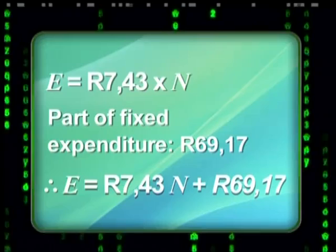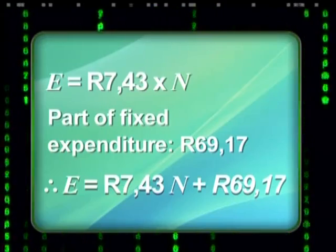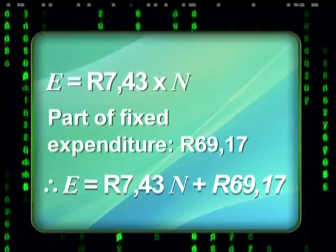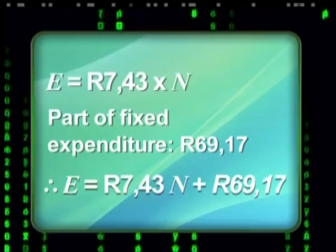Is the formula for total expenditure complete? No. Remember, I've allocated an equal part of the fixed expenditure to each item. So before Ma Di even makes a ribbon, she has a cost of 69 rand and 17 cents to cover. This value is not going to change and must be added to the total expenditure. This means my final formula for expenditure is E equals 7.43 times N plus 69.17.